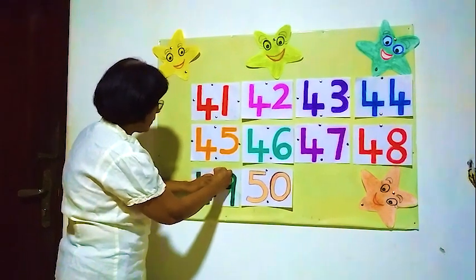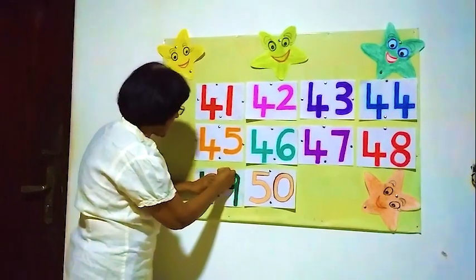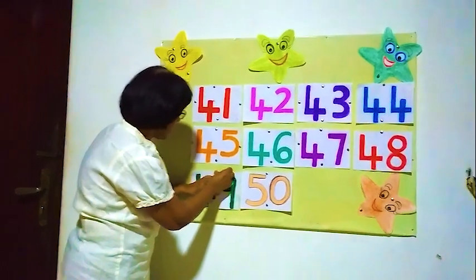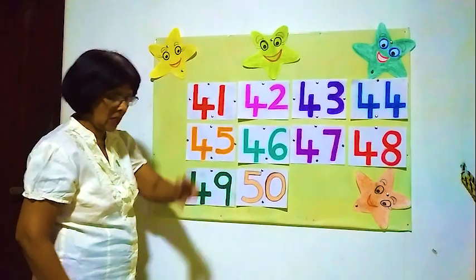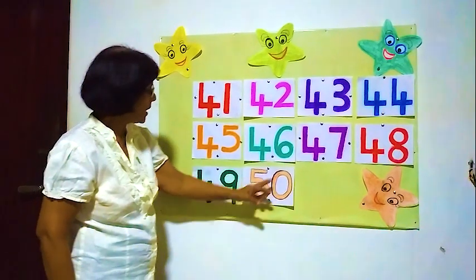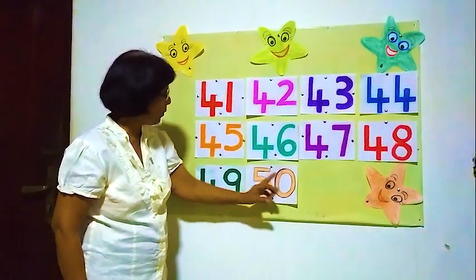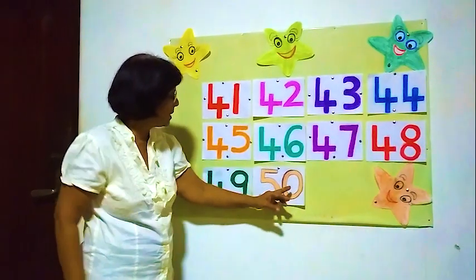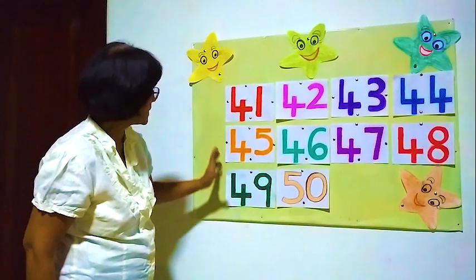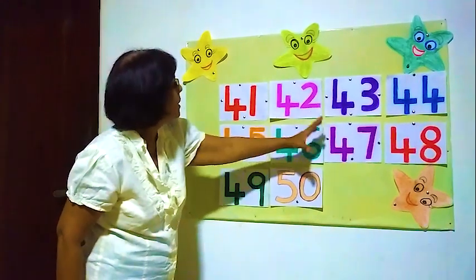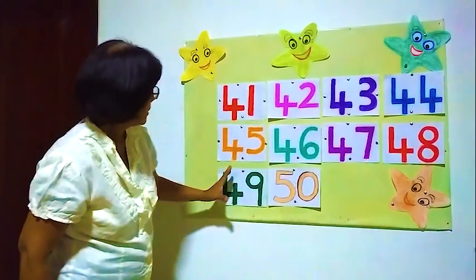After 49, what's the number? 50 — 5 and 0, 5 and 0. Now all the numbers are complete.